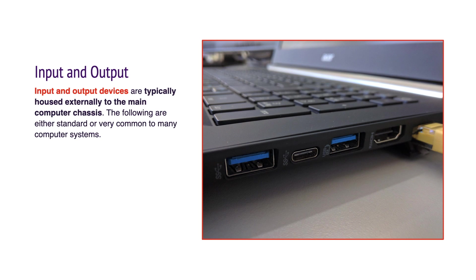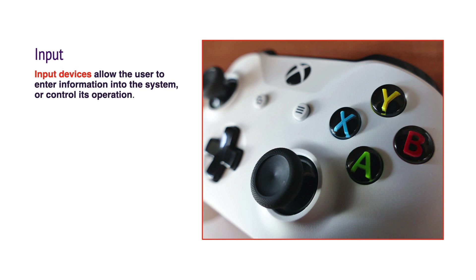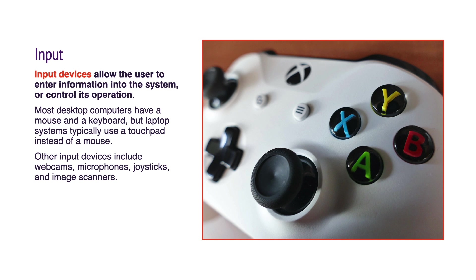Input and output devices are typically housed externally to the main computer chassis. The following are either standard or very common to many computer systems. Inputs and outputs are how humans and computers communicate with each other. Input devices allow the user to enter information into the system or control its operation. Most desktop computers have a mouse and a keyboard. Laptop systems typically use a touchpad instead of a mouse. Other input devices include webcams, microphones, joysticks, and image scanners.